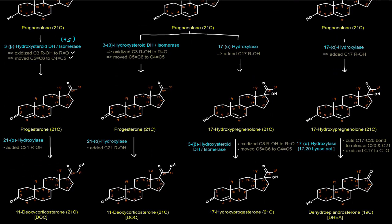The next reaction makes 11-deoxycorticosterone, done by 21α-hydroxylase. You'll notice the alphas and betas in parentheses — you may or may not see those, as they refer to stereochemistry which isn't shown here. The enzyme name makes sense because carbon 21 has a hydroxyl group added. That gives us 11-deoxycorticosterone, or DOC. This is the first mineralocorticoid we're making, and it's specifically a weak mineralocorticoid.